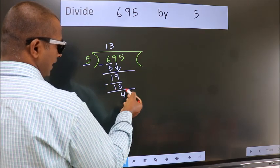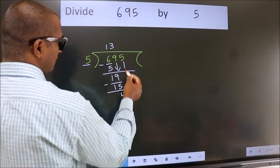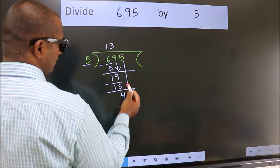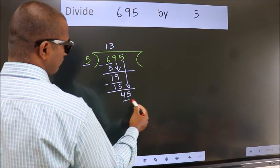We get 4. After this, bring down the beside number. So, 5 down. So, 45.